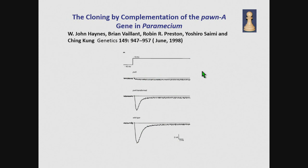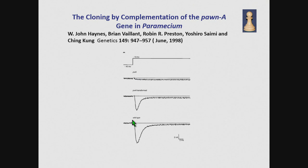About 23 years after the publication of that paper, I cloned the Poin-A gene by complementation. What you're being shown here is the voltage clamp depolarization of a cell. If you do that to a Poin cell, you do not see any inward conductance. If you do that to a wild-type cell, you see a nice inward current. And if you do this to a Poin cell that has been transformed with a wild-type Poin gene, you can now restore that current.